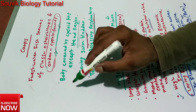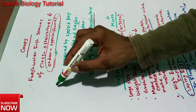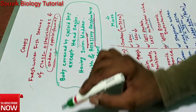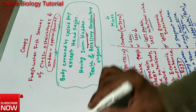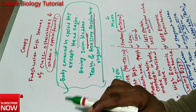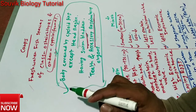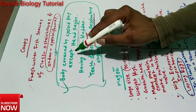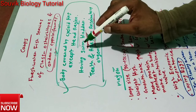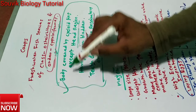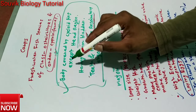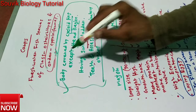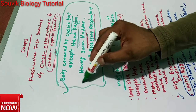Now the characteristics of carps — this is very very important, you have to remember it. First: body covered by cycloid scales, except the head region. Except the head region, all parts of the body are covered by cycloid scales.